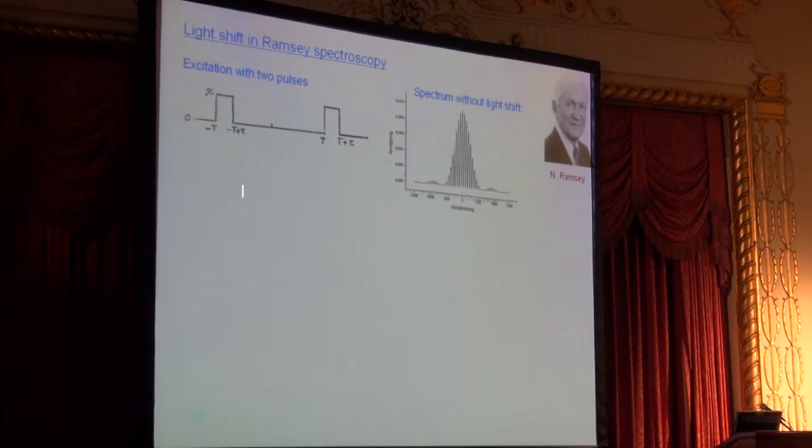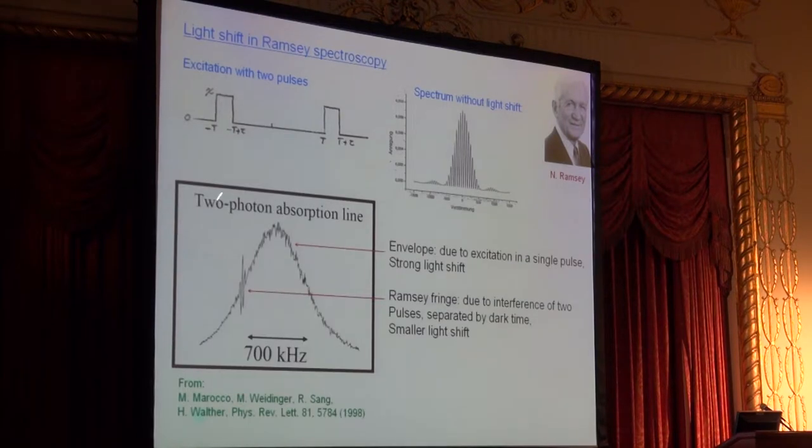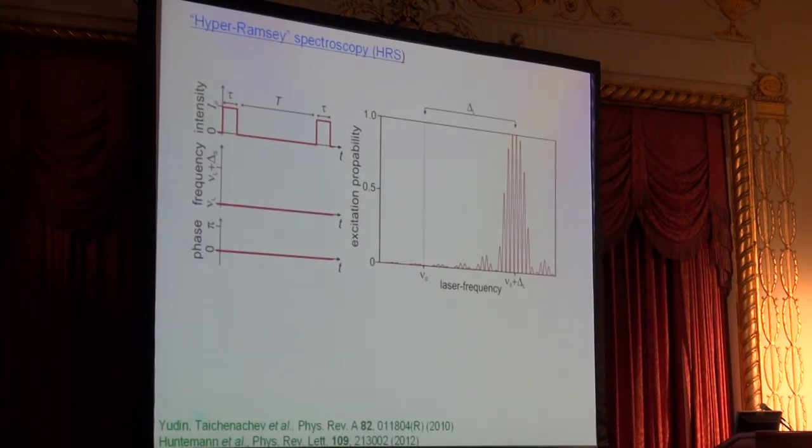Ramsey excitation is, of course, excitation with two pulses and a dark time in between. In the ideal case, you have a spectrum that looks like this interference pattern. In case there is light shift present—like in a two-photon absorption line—this light shift shows up very prominently in Ramsey spectroscopy. You have an envelope of the spectrum given by the excitation of the single pulse, where the laser light is present and where the full light shift is present. But the Ramsey fringes are due to the interference of these two excitation events separated by the dark time, where the atom is unperturbed and the light shift is absent. So the Ramsey fringe pattern is displaced from the envelope because it shows less light shift. Looking at the spectrum, one can evaluate both a narrow resonance and also get some information about the light shift.